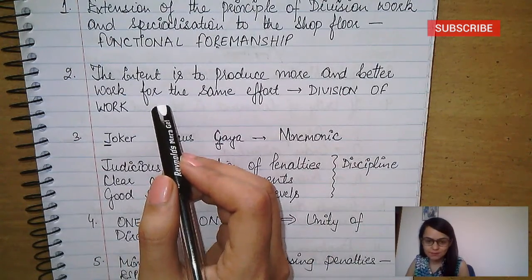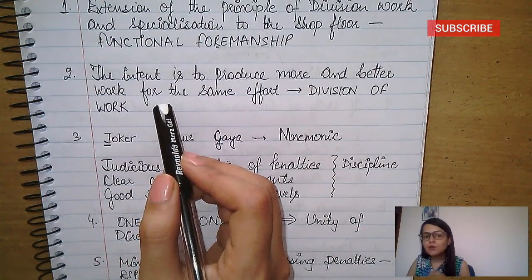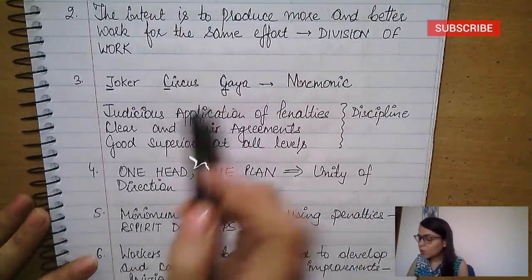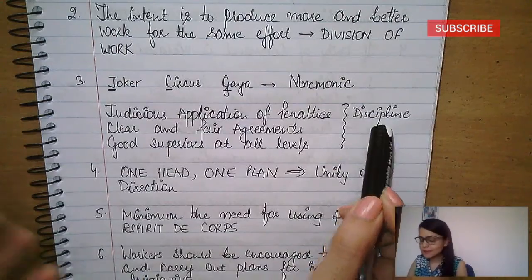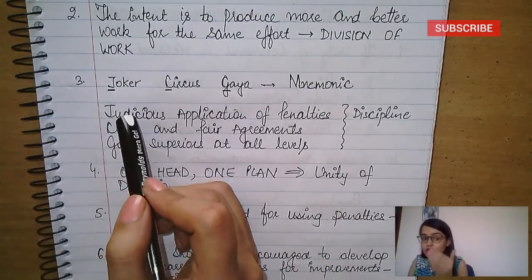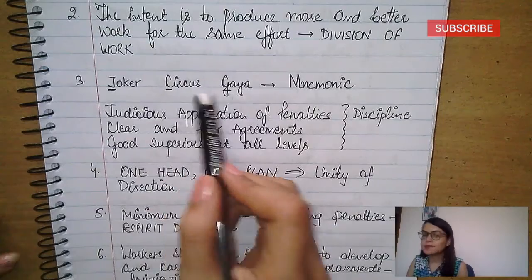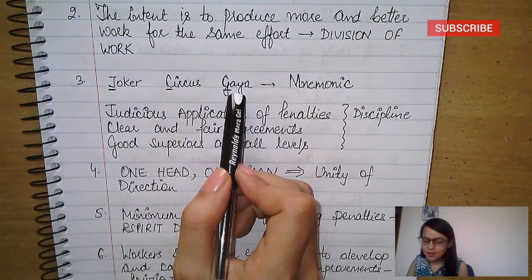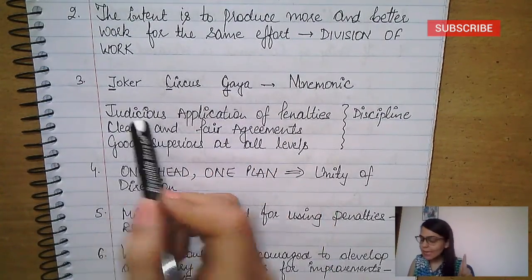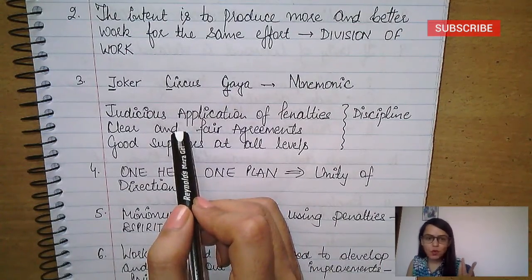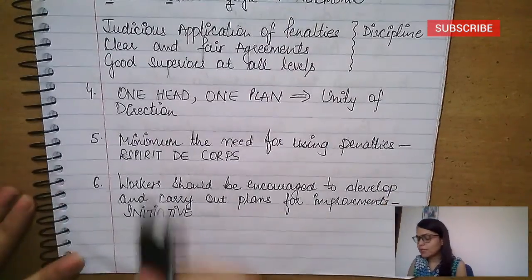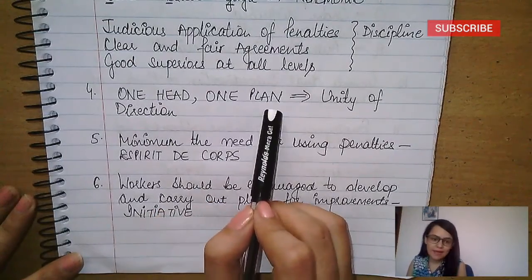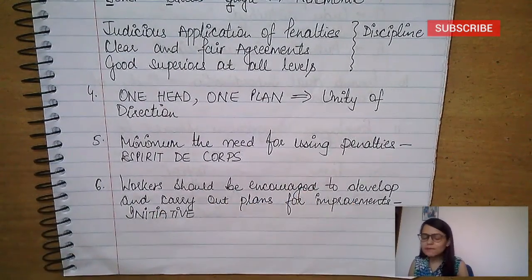For discipline, we made a mnemonic: JCG — Joker Circus Gaya. This mnemonic stands for: judicious application of penalties, clear and fair agreements, and good superiors at all levels. These are the keywords. In case studies, if you find these, then it is discipline. For unity of direction: one head, one plan.